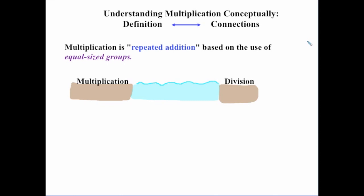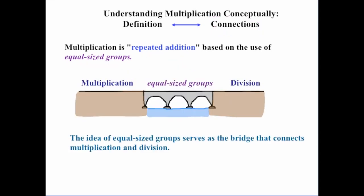This is important because by defining it that way, it enables us to make some connections, especially between multiplication and division. Because defining it as just repeated addition leaves us this big river or whatever in the middle, and there's no way to cross and connect the two. The equal-sized groups is important because it serves as the bridge that connects these two ideas of multiplication and division.